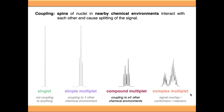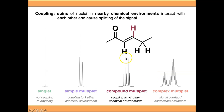This video is going to focus on compound multiplets. The example I gave in the previous video was a proton here in purple, which has two chemical environments, one to either side of it. Because these two chemical environments are different from each other, when the purple proton couples to these two environments it will do so to form a compound multiplet.